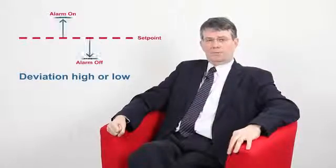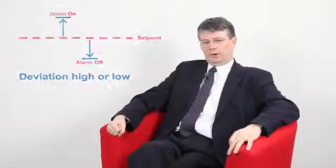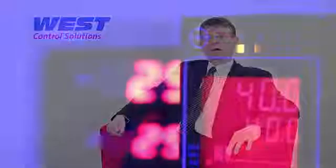For example, if the set point was set to 200 and a high deviation alarm was set at 5 degrees, it would activate at 205 degrees. A low deviation alarm with a value of perhaps minus 3 would activate at 197 degrees. If the set point was changed to 220 degrees, the activation points would be 225 and 217 degrees respectively.